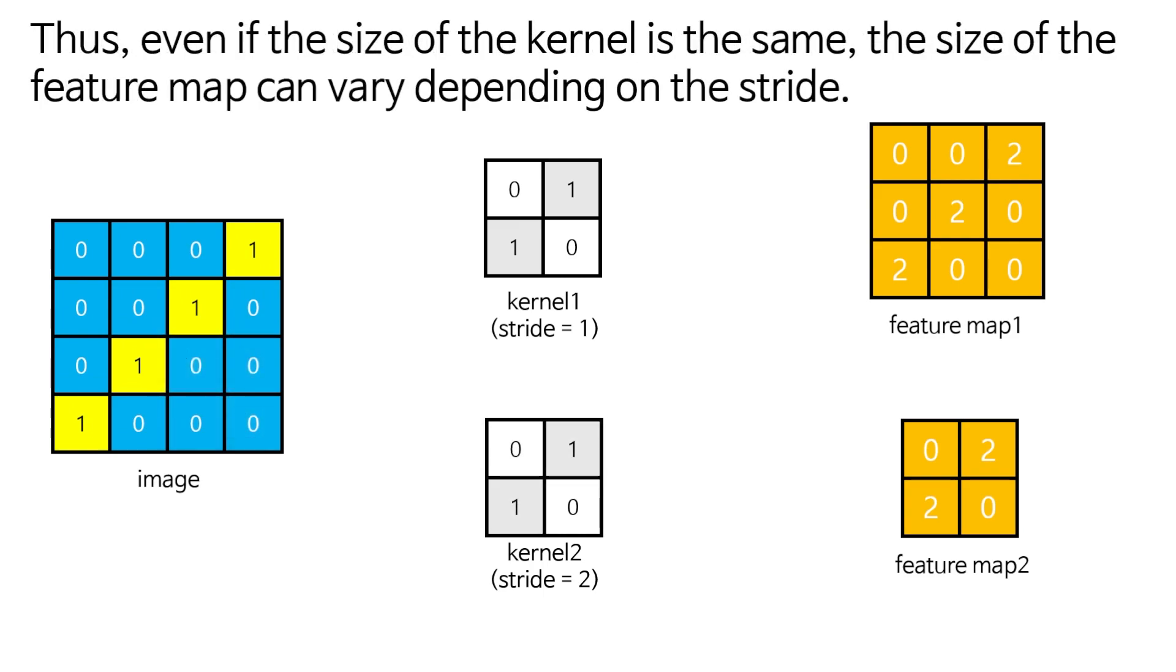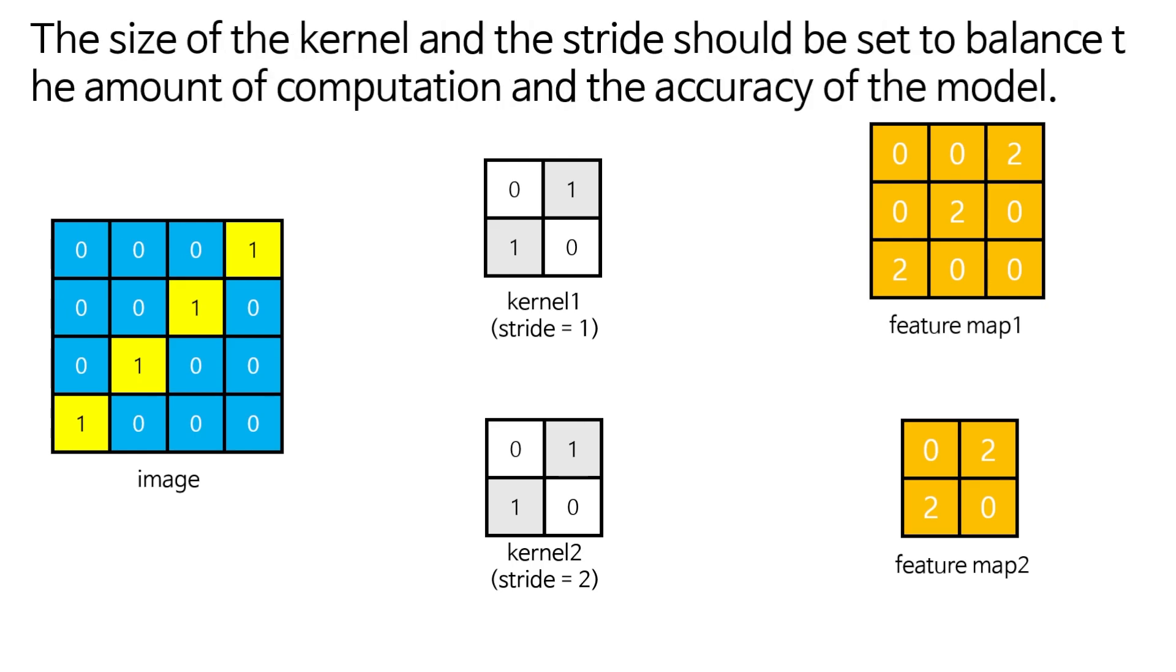Thus, even if the size of the kernel is the same, the size of the feature map can vary depending on the stride. The size of the kernel and the stride should balance the amount of computation and the accuracy of the model.